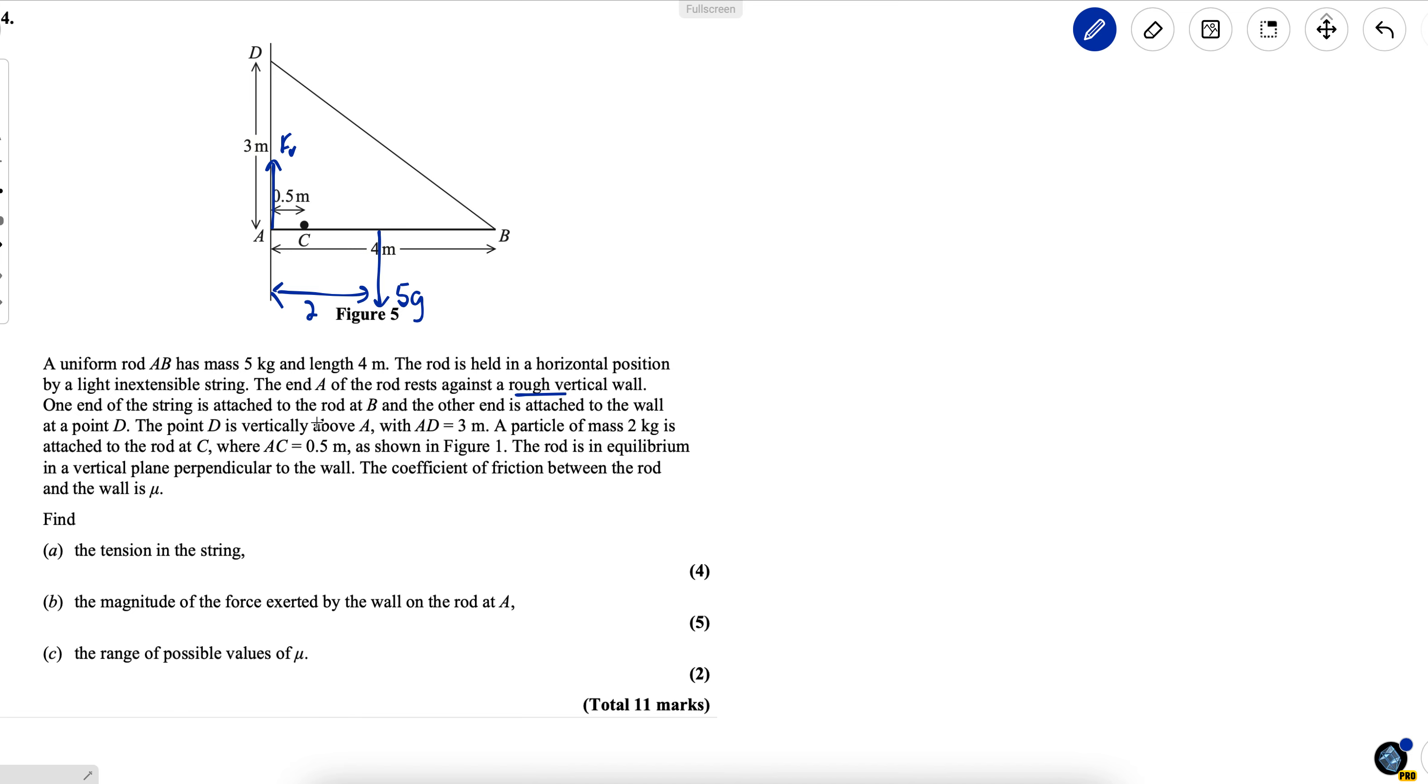One end of the string is attached to the rod at B and the other end is attached to the wall at a point D. So there's tension in this string pulling away from B. The point D is vertically above A with AD 3 meters marked on. A particle of mass 2 kilograms is attached to the rod at C where AC is 0.5 meters. So that's 2 kilograms, 2 times gravity.